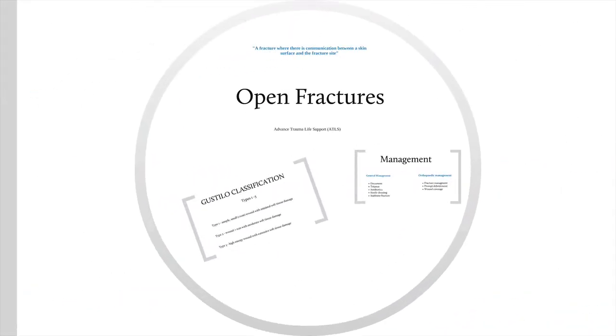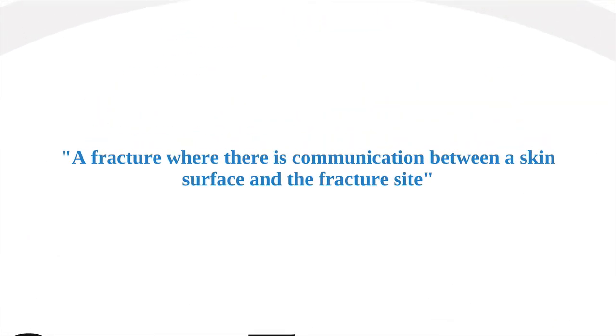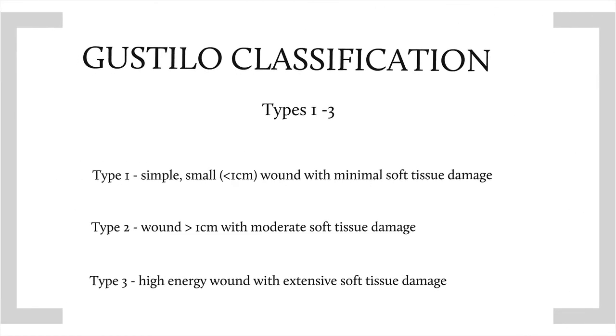Management of open fractures. An open fracture is any fracture where there is communication between a skin surface and the fracture site. Open fractures are usually associated with higher energy mechanisms, so remember to assess for other injuries and resuscitate according to ATLS principles. Open fractures are commonly classified using the Gustilo classification, types 1–3. Type 1 is a simple, small, less than 1 cm clean wound with minimal soft tissue damage. Type 2, the wound is greater than 1 cm with moderate soft tissue damage. Type 3 is any high-energy wound with extensive soft tissue damage.